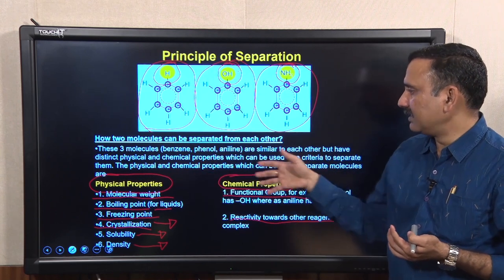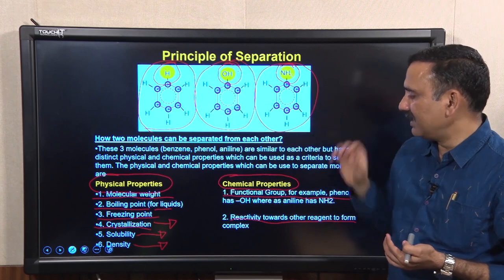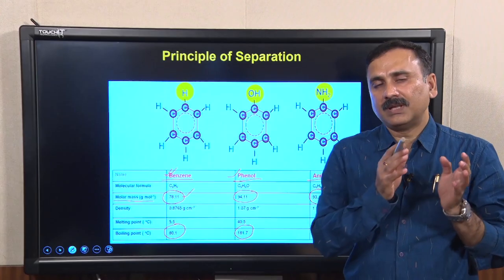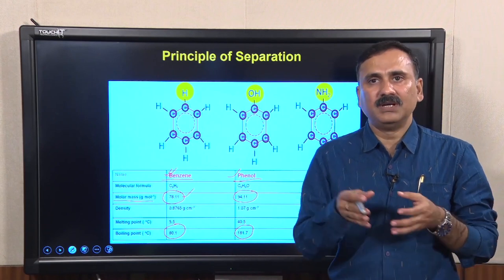Let us see how you can exploit physical or chemical properties for benzene, phenol, and aniline. The molecular weight of benzene is 78.11, phenol is 94.11, and aniline is 93. So if you want to purify benzene from phenol you can exploit the differences in their molecular weight. You can also utilize the differences in boiling points using the technique called fractional distillation.